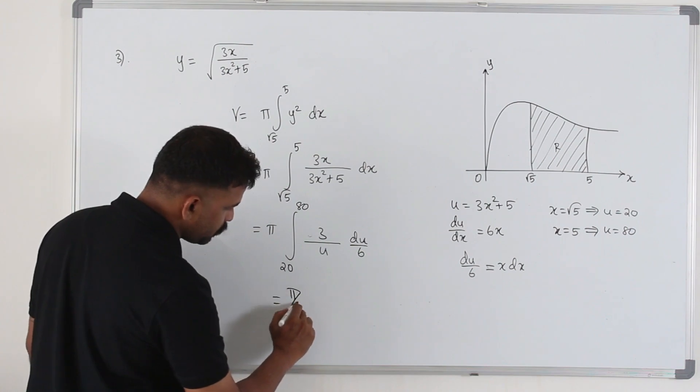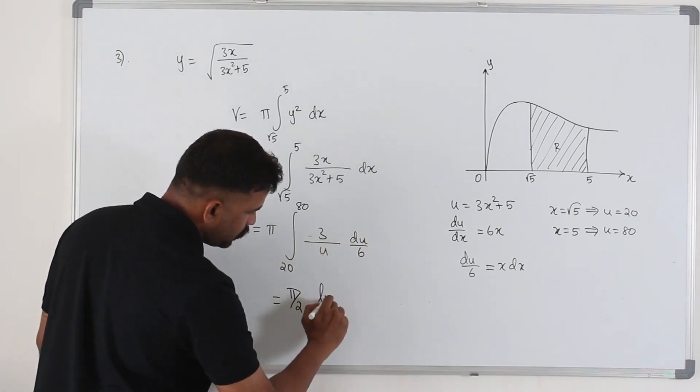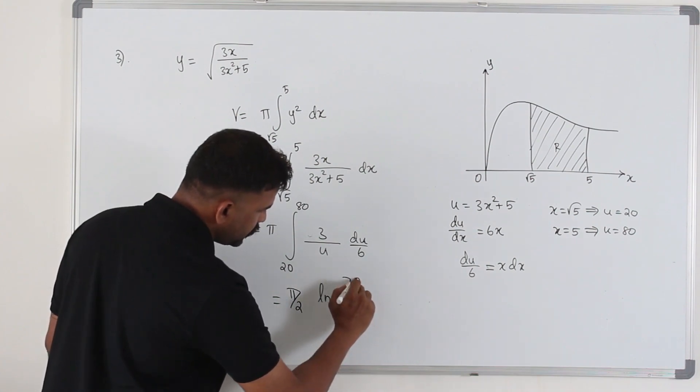3 over 6 is 1 over 2. So pi over 2, 1 over u du. Integral of 1 over u is ln u. So the limit is 20 to 80.